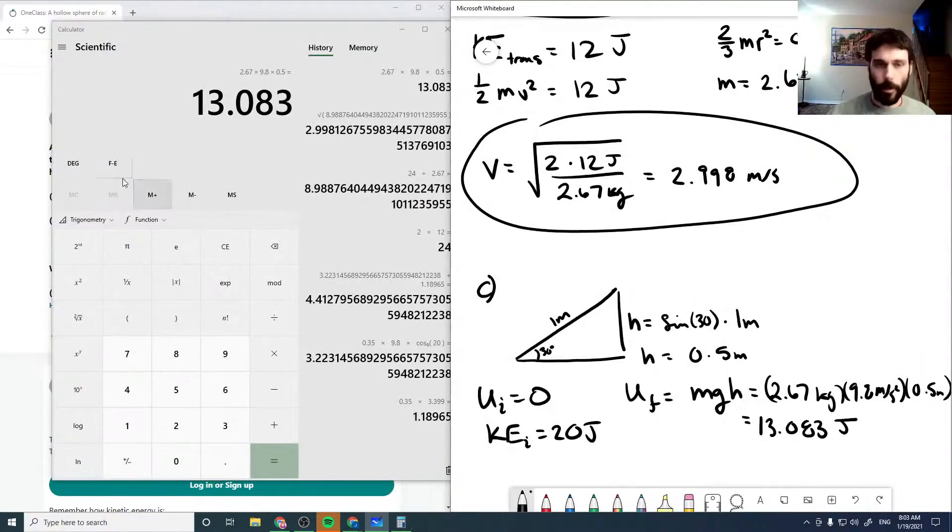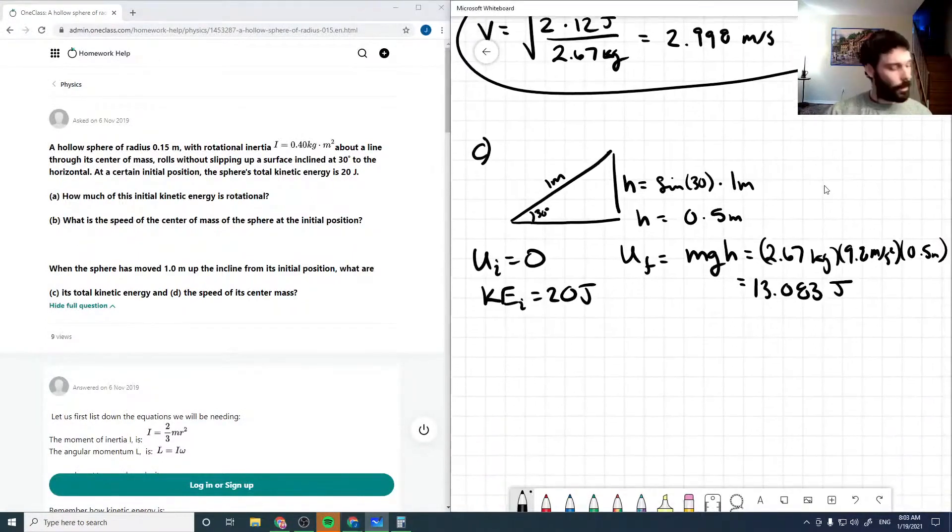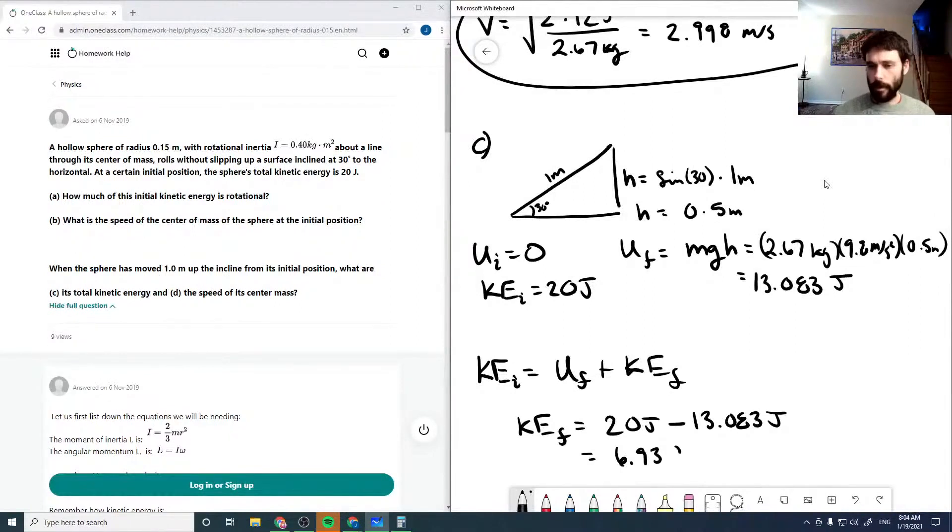So this is actually the point where if our moment of inertia was too large, then our potential energy there would be negative, which doesn't make any sense, as then the sphere wouldn't be able to roll up that far. And so then our kinetic energy initial has to equal our final potential plus our kinetic energy final. And so then our kinetic energy final must equal our 20 joules minus this value, which is equal to 6.93 joules.